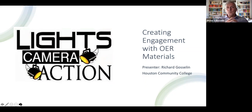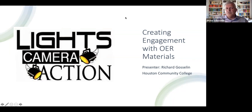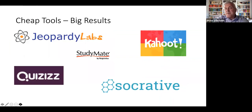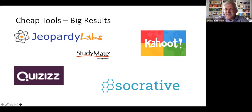I adopted two Creative Commons License books through OpenStax, which is right here in my own backyard at Rice University. I used the macro book and the micro book as the backbone for my course. But in addition to that, I started thinking I need to develop ancillary, supplementary materials. So I started to roam around and see what was out there, and I found some really cheap tools that provided some really big results.